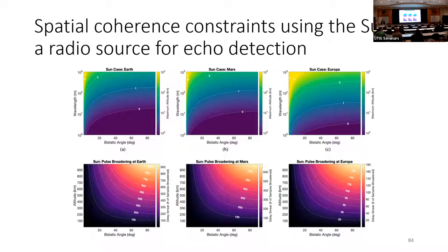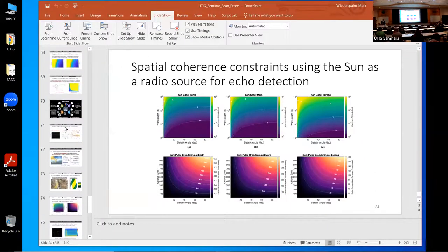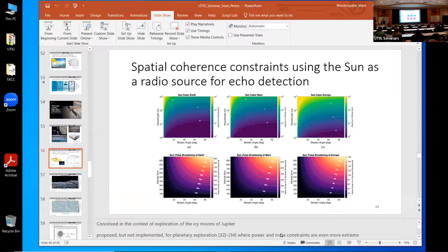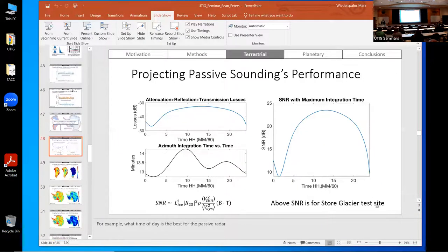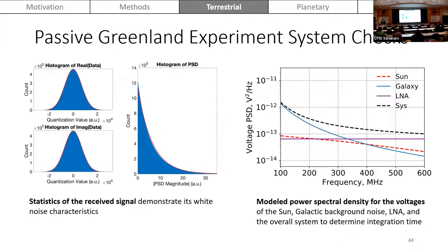Audience question: how strong a radio source is needed for this approach? Could it work on a landed mission on an asteroid? Sean replies: in the Jupiter's radio emission case at Europa, the signal is five orders of magnitude greater than galactic background noise — a very strong signal. For the sun case, it comes down to maximum integration time. Because you're receiving noise — similar to what passive seismology does — if you can receive it for longer, you get a better estimate. The sun signal at roughly 10^-13 V²/Hz is actually below background noise, but because you can integrate over a very long period of time, you can resolve an echo peak above the noise floor.